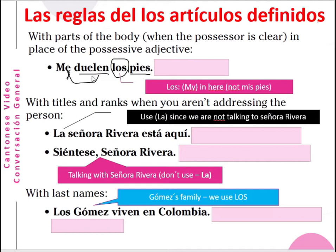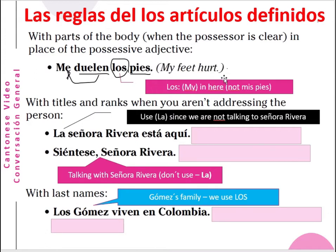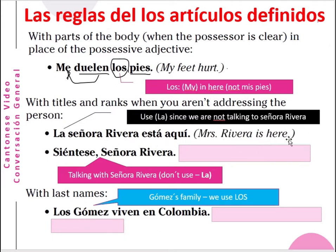In this case, 'los' replaces the possessive adjective 'me', so the meaning is 'my feet hurt'. But with titles and ranks, when you aren't addressing the person directly — for example, when you talk about Mrs. Rivera — 'la señora Rivera está aquí' means Mrs. Rivera is here. You use the article 'la'.